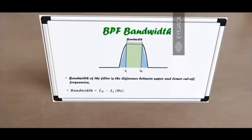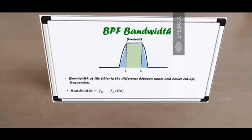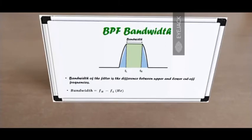What is the bandwidth of a filter? It is the difference between the upper and lower cutoff frequencies. In the picture, FL represents the lower cutoff frequency and FH is the upper cutoff frequency. The bandwidth is the absolute difference between those two. For example, if FL is 500 Hz and FH is 5000 Hz, the difference is 4500 Hz, which is the bandwidth.